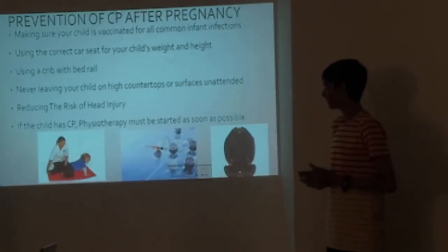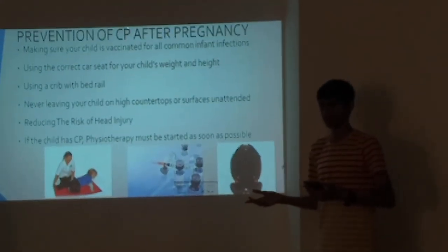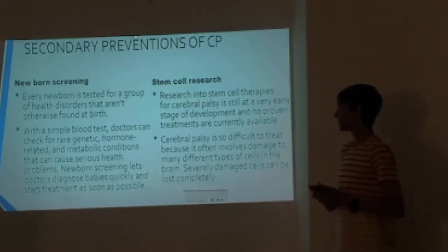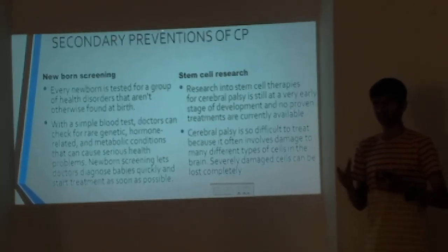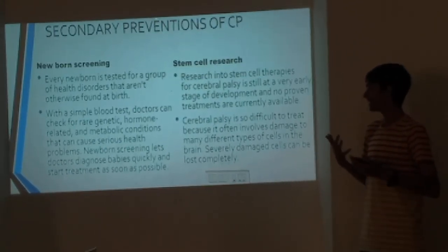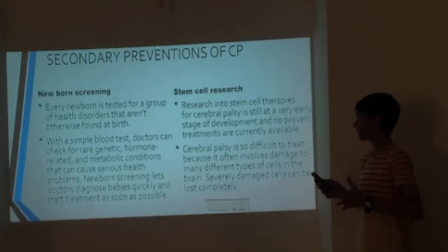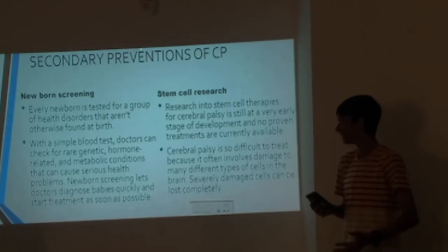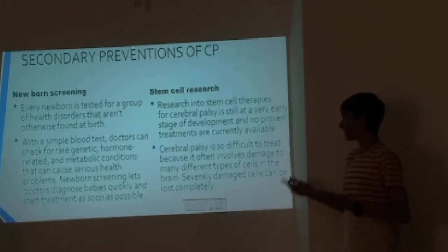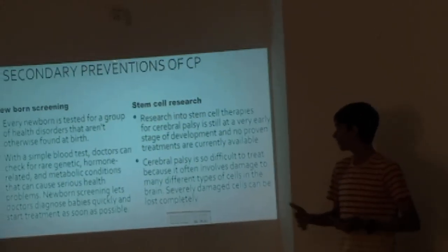Prevention of Cerebral Palsy after pregnancy is essentially making sure that the child doesn't sustain any injuries. This includes making sure the child is vaccinated for common infant infections such as Zika virus. Using the correct car seat for the child's weight and height reduces the risk of head injuries. Choosing the right crib with appropriate height prevents the baby from falling. Never leaving your child unattended near high surfaces is also important. If the child does have Cerebral Palsy, physiotherapy or physical therapy must be started as soon as possible. Newborn screening tests — using simple blood tests and DNA tests — allow doctors to check for genetic and hormone-related disorders and diagnose any existing conditions early.